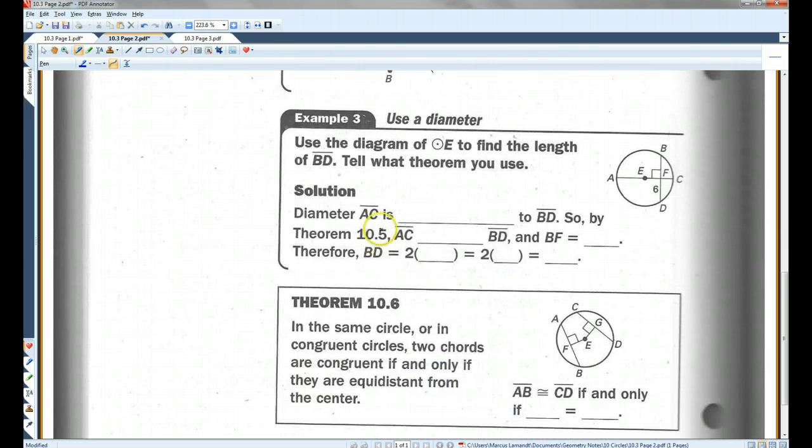All right, example three. Use the diagram of circle E to find the length of BD. So here's BD. This looks like a diameter. Tell what theorem you use. Diameter AC is perpendicular to BD. So, by theorem 10.5, AC is perpendicular to BD, and BF equals DF. Then it bisects it.